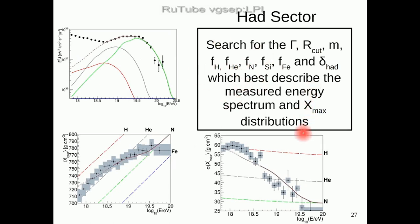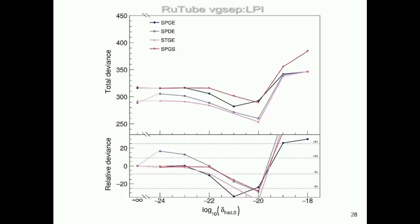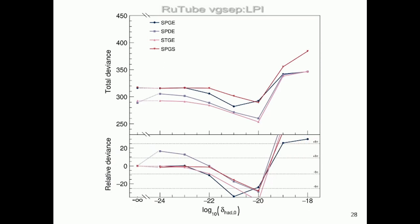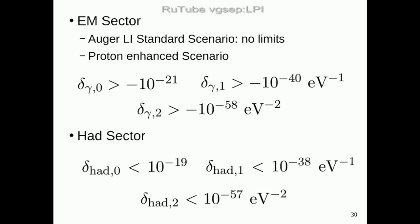For the hadronic sector, this is a completely different, independent analysis. We fit the energy spectrum and the Xmax distribution — a standard Auger analysis — but now with one additional parameter: the Lorentz invariance break coefficient delta_h. We search in our data for the best description with delta_h different from zero. The result shows the total deviance as a function of energy with a minimum at a given value of delta_h, but the total deviance is too large to claim a discovery. However, we use this minimum in the relative deviance to set an upper limit on delta_h at five-sigma confidence level.